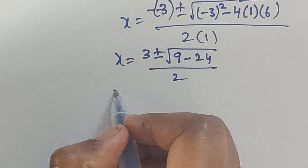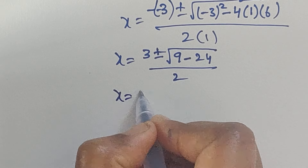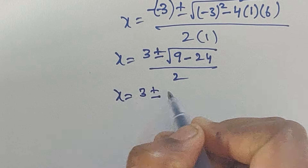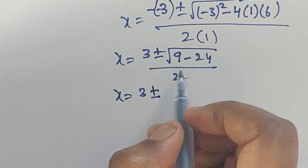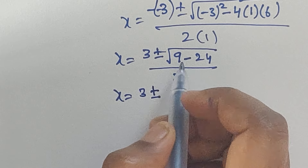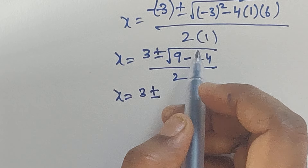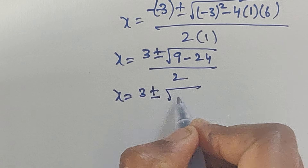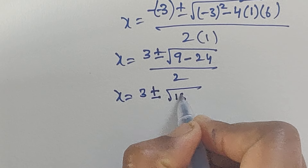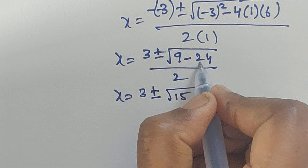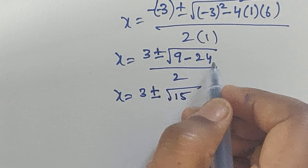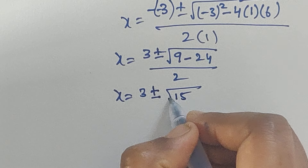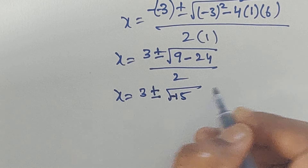So x equals 3 plus or minus square root of 9 minus 24, which equals square root of minus 15, divided by 2.